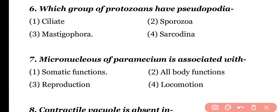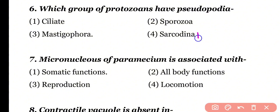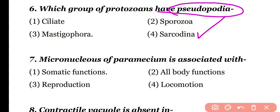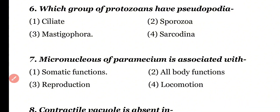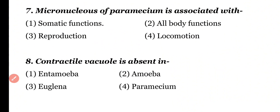Question number 6: Which group of protozoa have pseudopodia? Ciliata, Sporozoa, Mastigophora, or Sarcodina? Correct answer is option 4. Sarcodina includes Amoeba, and Amoeba has the locomotory organ pseudopodia.